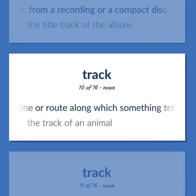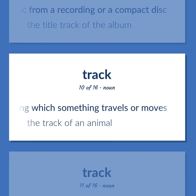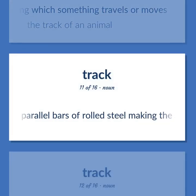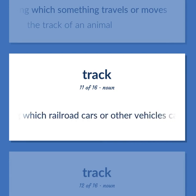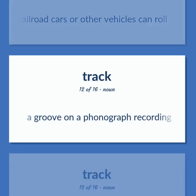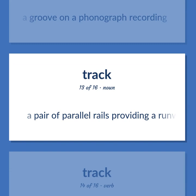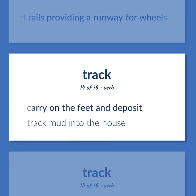A line or route along which something travels or moves. The track of an animal. A bar or pair of parallel bars of rolled steel making the railway along which railroad cars or other vehicles can roll. A groove on a phonograph recording. A pair of parallel rails providing a runway for wheels. Carry on the feet and deposit. Track mud into the house.